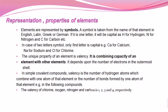A unique property of an element is valency. Valency is the capacity of an element to combine or bond with another element. It depends on the number of unpaired electrons in the outermost shell, called the valence shell. In a simple covalent bond, valency is the number of hydrogen atoms that combine with one atom of that element.